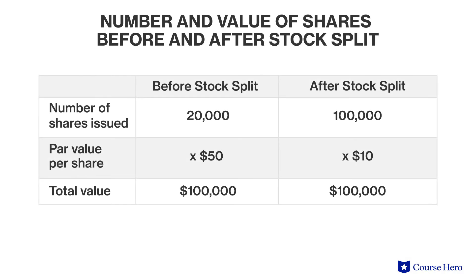Suppose that company ABC has 20,000 shares of $50 par common stock outstanding. The current market price is $100 per share. The board of directors declares a 5-for-1 stock split, which means that each share will be split into five smaller shares. As a result, the par value goes from $50 down to $10, and the number of shares goes up from 20,000 to 100,000.